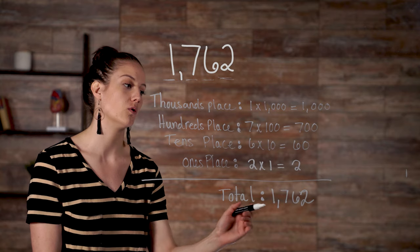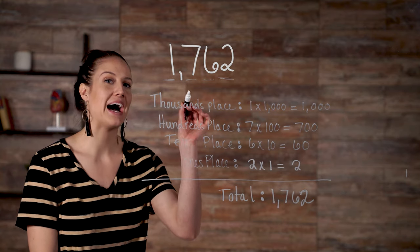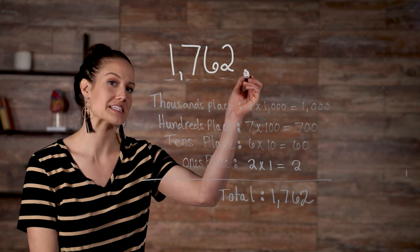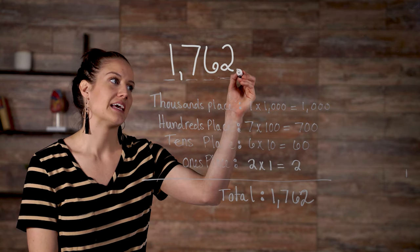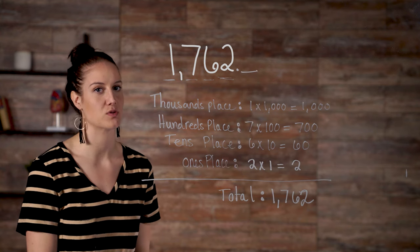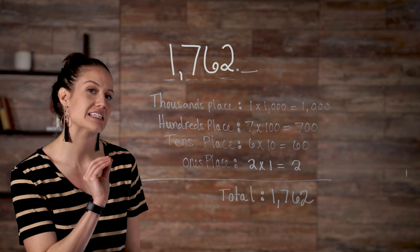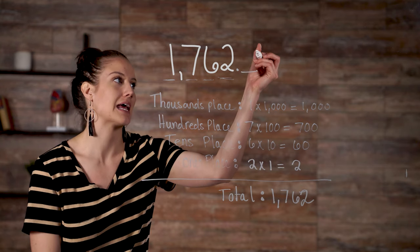So now, any number behind our last number, so in this case, two, is called the tenths place. And this is where decimals come into play. Let's look at 1,762.8. The 0.8 behind the number two equals eight-tenths of one whole.